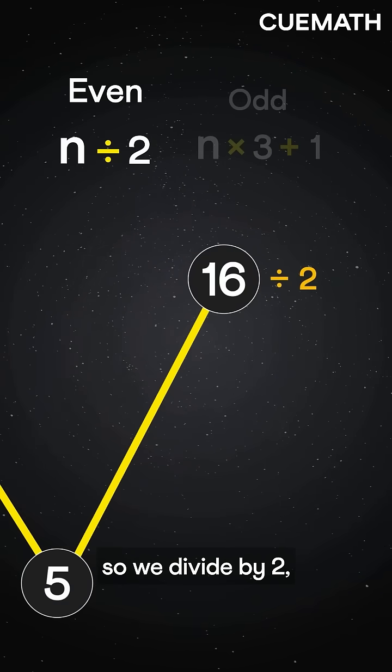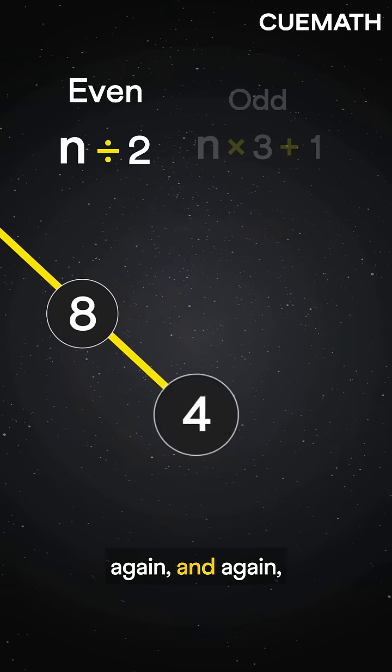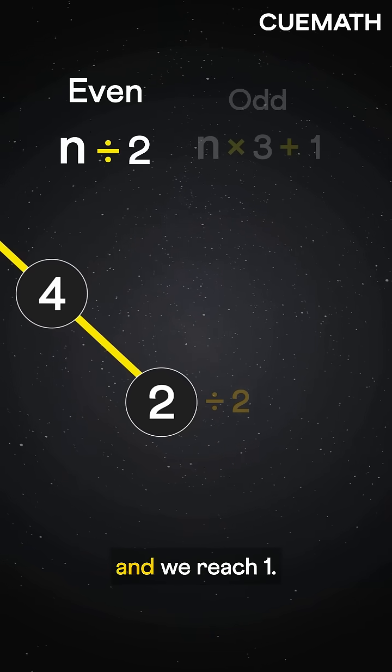which is even, so we divide by two. Again, and again, and once more, and we reach one.